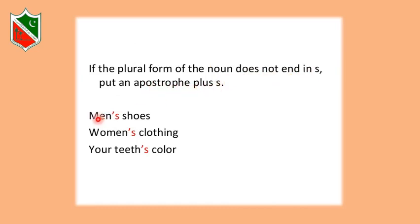If the plural form of a noun does not end in S, put an apostrophe plus S. For example, men's shoes — men is an irregular plural with no S, so we put apostrophe and then S. Same with women's clothing — women is plural and we put apostrophe S. And your teeth's color — teeth is already plural, so we put apostrophe S. These are all irregular plurals.